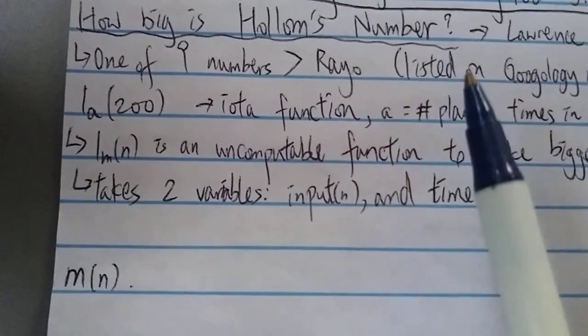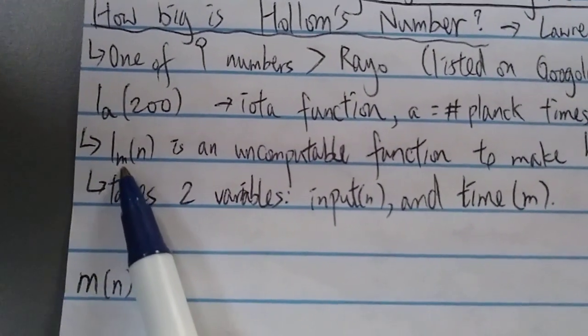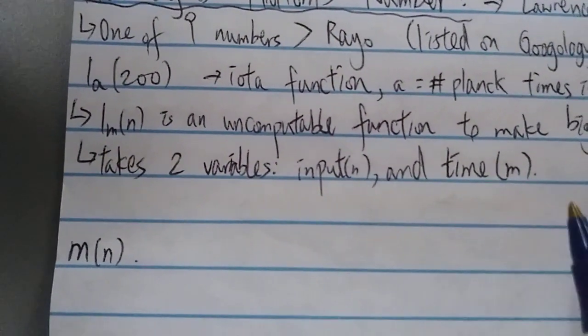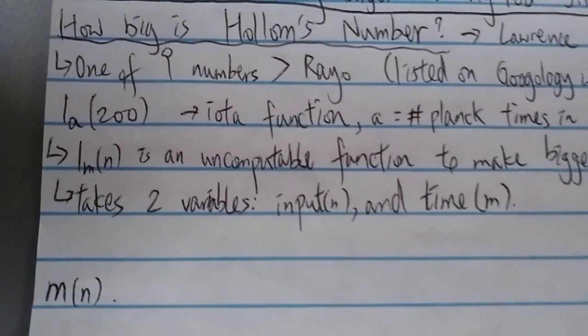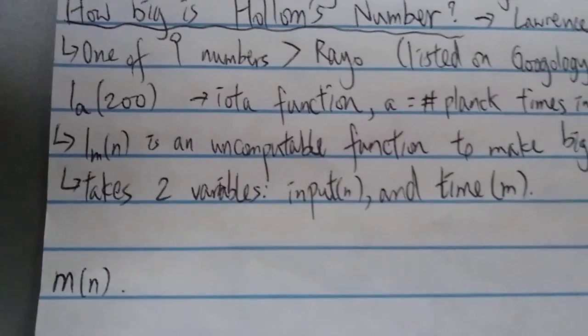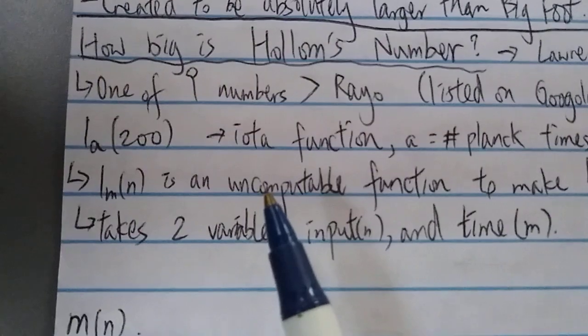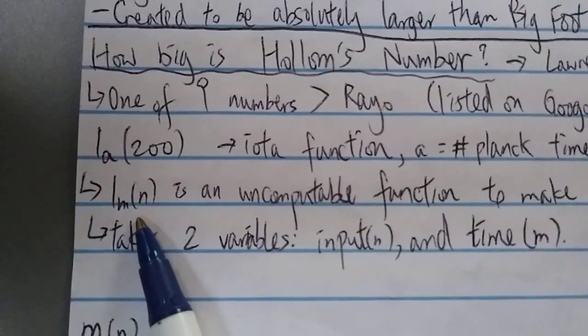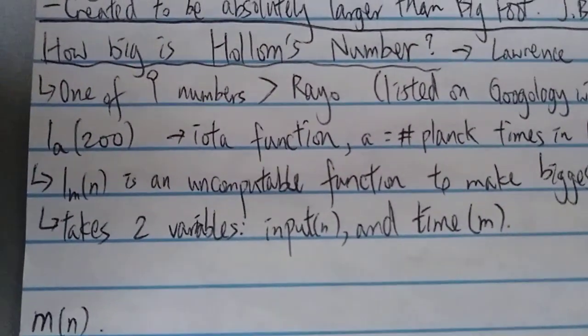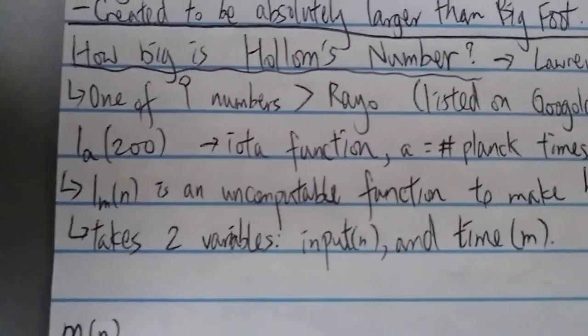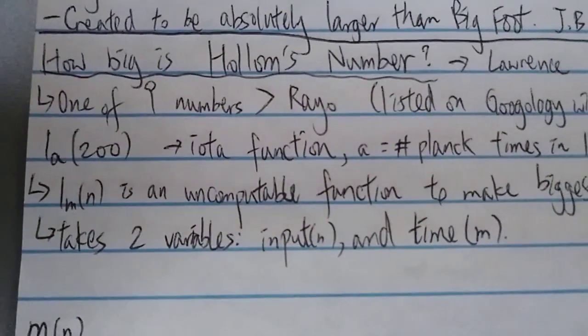The input will be n, just like other functions, and there's another variable m over here. M represents time. Basically, what it means is the largest number or the largest output that can be created in m time. In this case, m is the plank time, or you can treat it as years. The biggest number humans can make in m number of years, something like that.